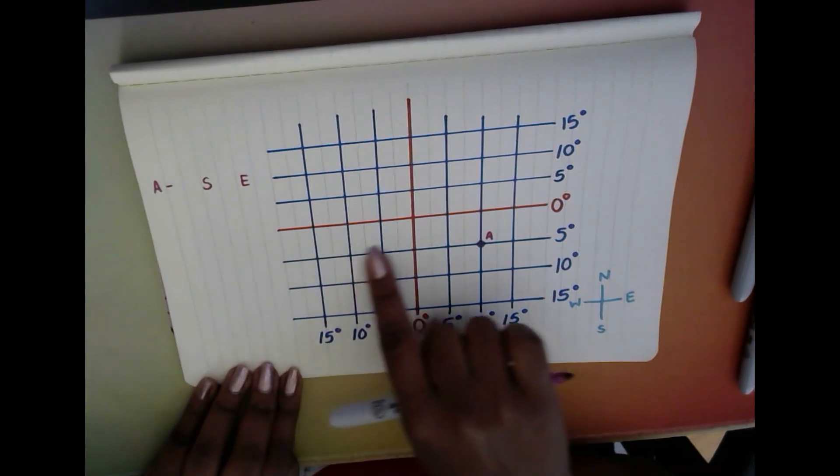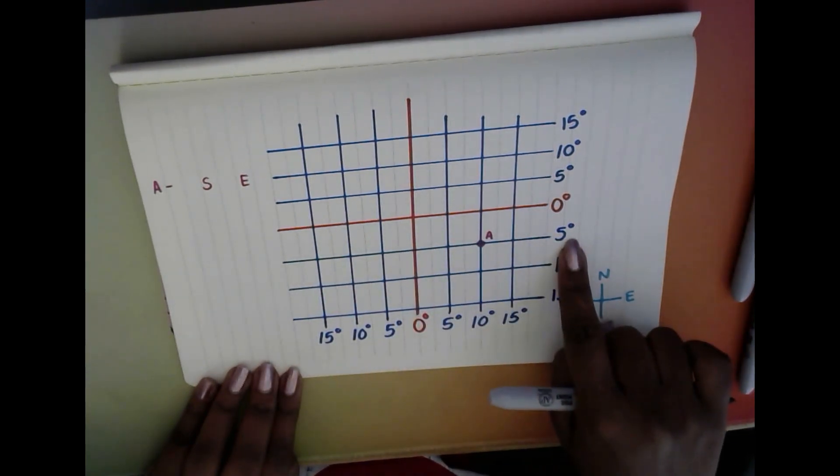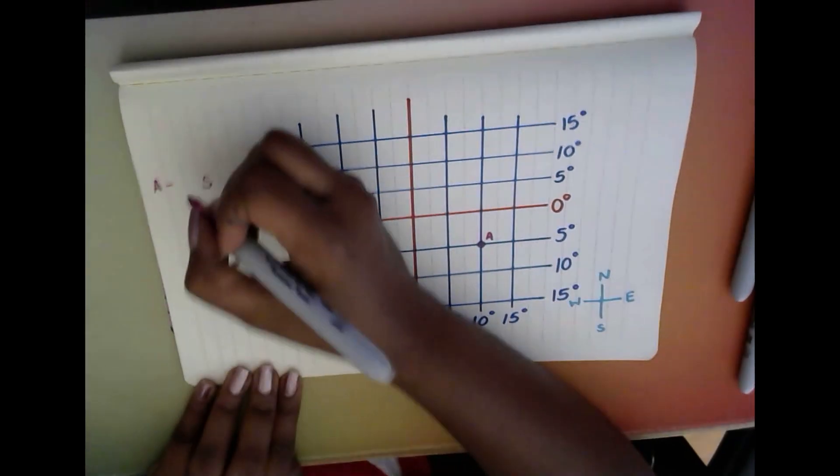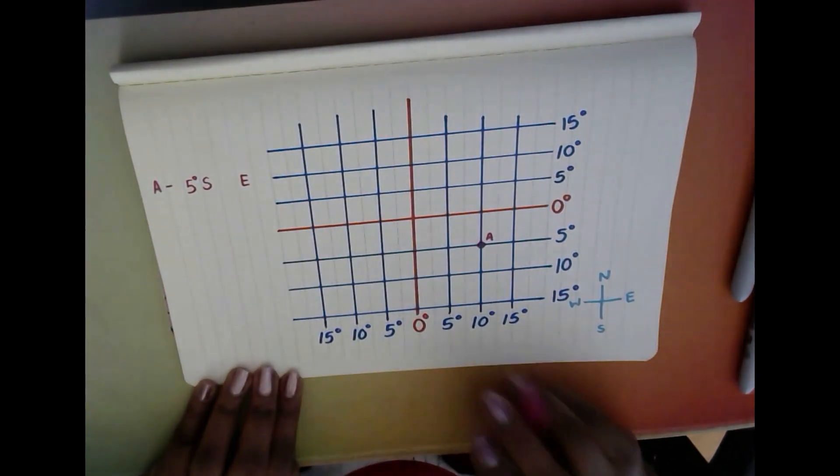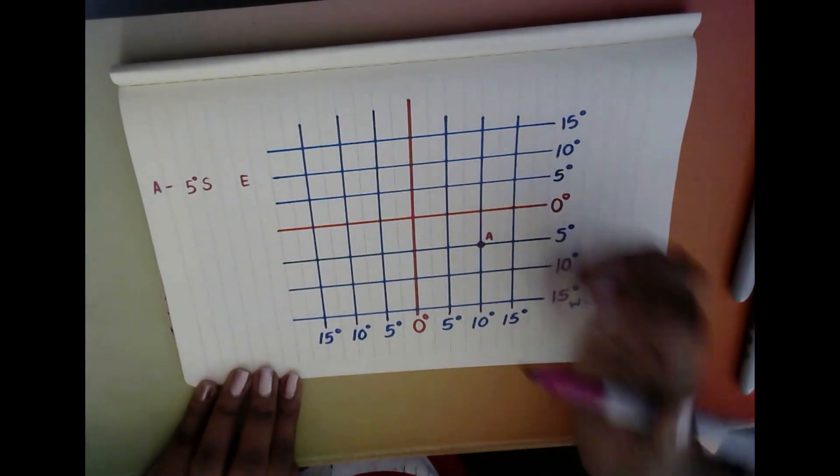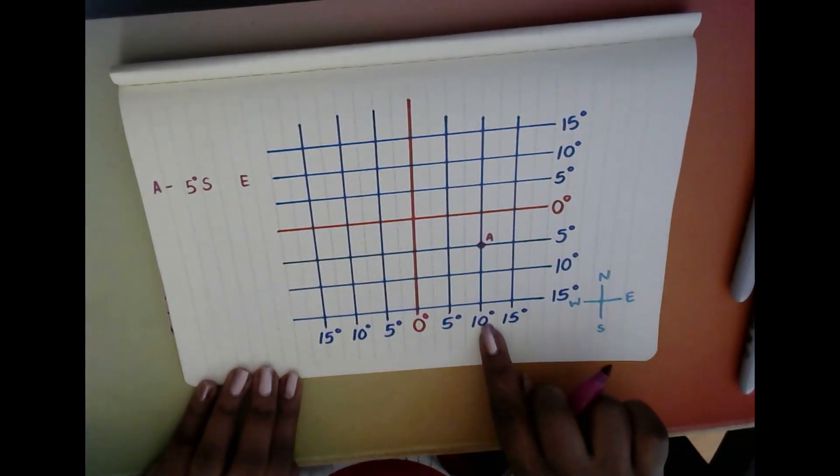We're looking at our latitude lines and we can see that A is sitting very nicely on the five degree line, so the answer is five degrees south. Then we look at our longitude lines and we can see that it is sitting nicely on the 10 degree line of longitude.